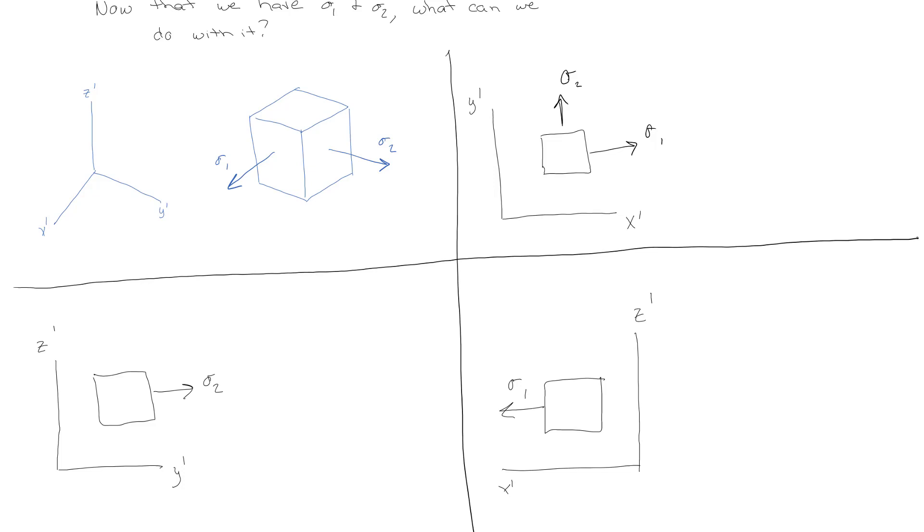looking down the x prime axis so z and y, and then the last one in the bottom right corner would be if I was looking down the y prime axis so the x and the z and that's why the x is to the left just because I'm looking down the positive y.